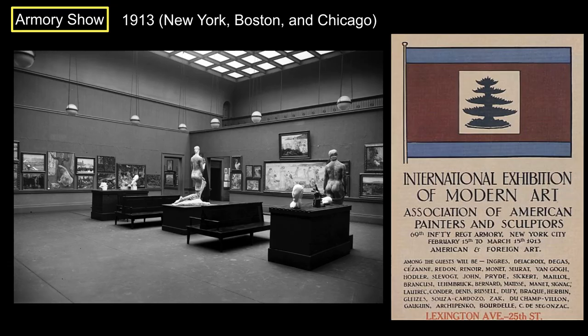Just a few years later, American art undergoes a massive shift from realism and Impressionistic works to more modern trends. In 1913, some artists related to Henri, called the Association of American Painters and Sculptors, organized the International Exhibition of Modern Art in New York City at an old armory. The exhibition had about 400 works by European artists, including French Romanticism, Courbet, Monet, Van Gogh, Cézanne, Picasso, Matisse, Kirchner, and Kandinsky, and about a thousand works by American artists, especially those like Henri who advocated for gritty urban realism.